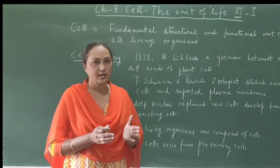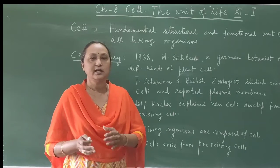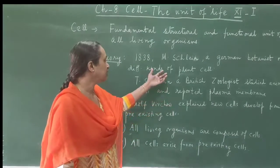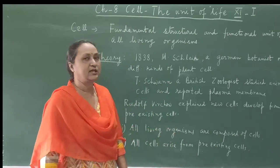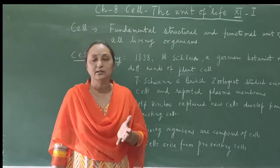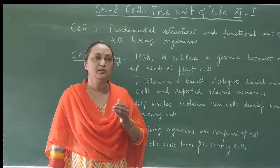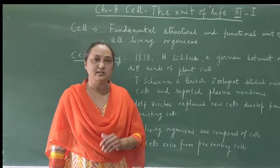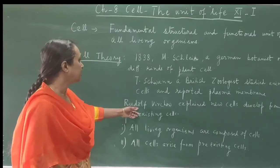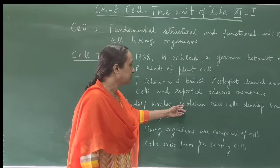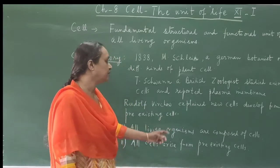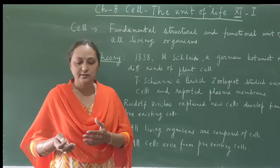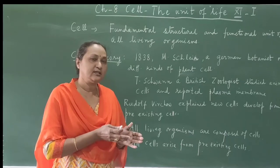So the plant cell has a cell wall in addition to the cell membrane, whereas the animal cell has only a cell membrane or plasma membrane. Together, based on their observations, they proposed a cell theory, but they did not explain how a cell divides or how a cell develops from a pre-existing cell. Another scientist, Rudolf Virchow, explained that new cells develop from pre-existing cells.